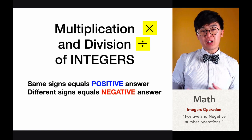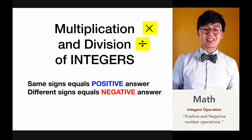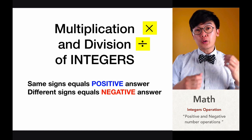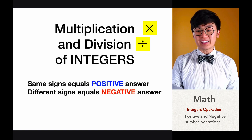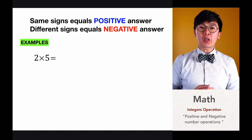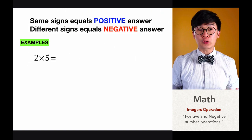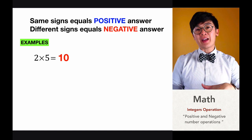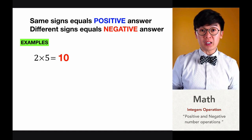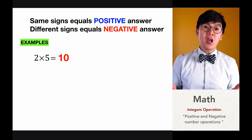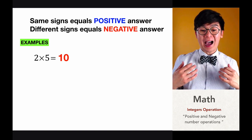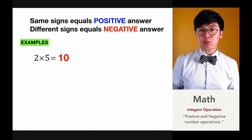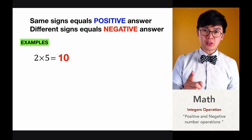The rule for multiplying and dividing two integers is pretty basic: same signs will result in a positive answer, and if you have different signs, your product or quotient will be a negative value. For example, two times five is equal to 10. Before diving into integers, it's extremely important to know and master the multiplication table. I highly recommend mastering it so you can answer math problems easily and with confidence.